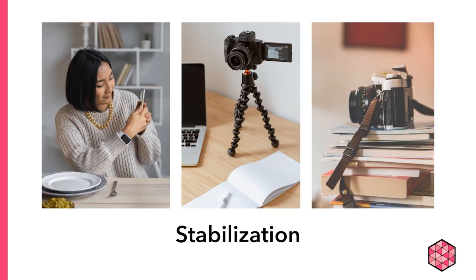A final tip is to make sure that you always use some form of stabilization for your camera. This might mean using a traditional tripod, but you can also use various DIY methods like stacked books, tables and chairs, and even small items like Legos or hair clips can help you stabilize your camera. You can also use a small portable tripod, which often has attachments for smartphones. Or you can simply use your own body by resting your elbows on a table in order to make sure you're holding your device still.